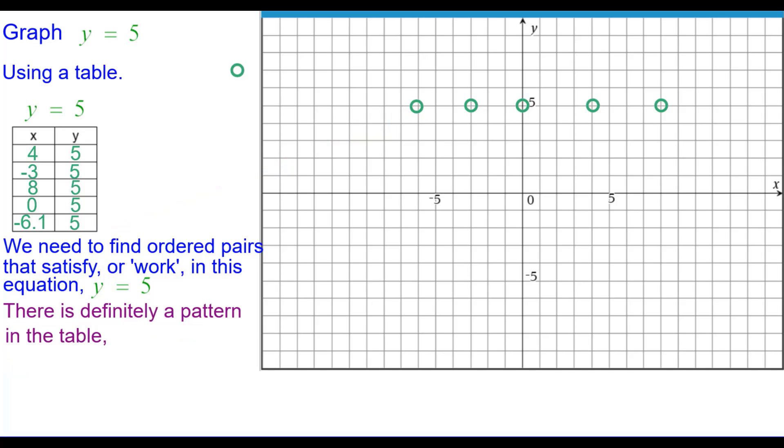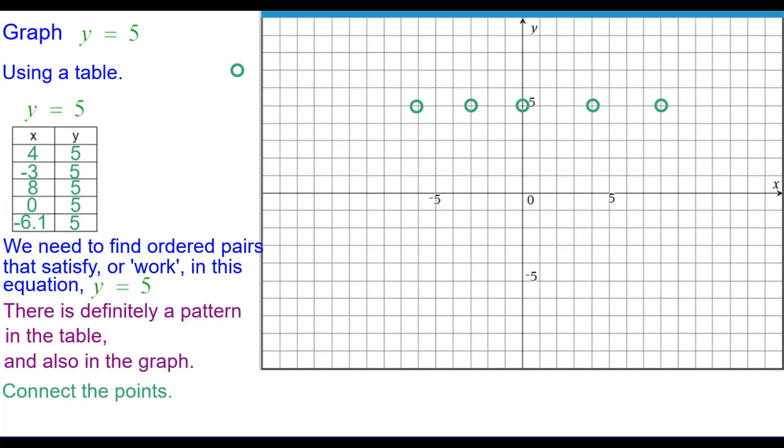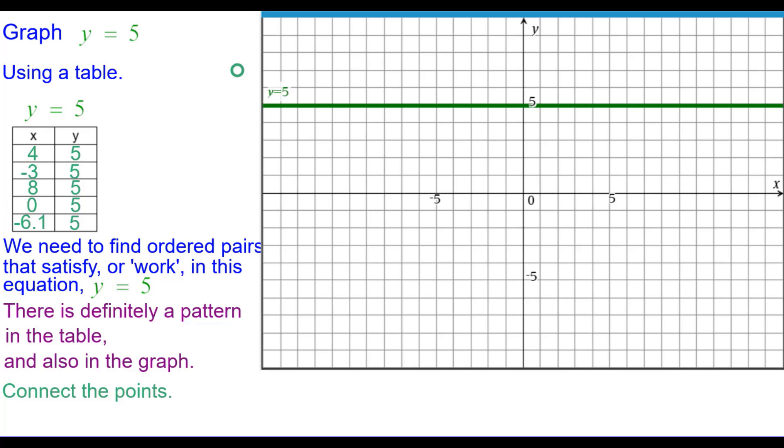There's definitely a pattern in the table. Five in each of the y coordinates and also pattern in the graph. All five of the points are along the same line or are collinear. Connect the points and this is the line we get.